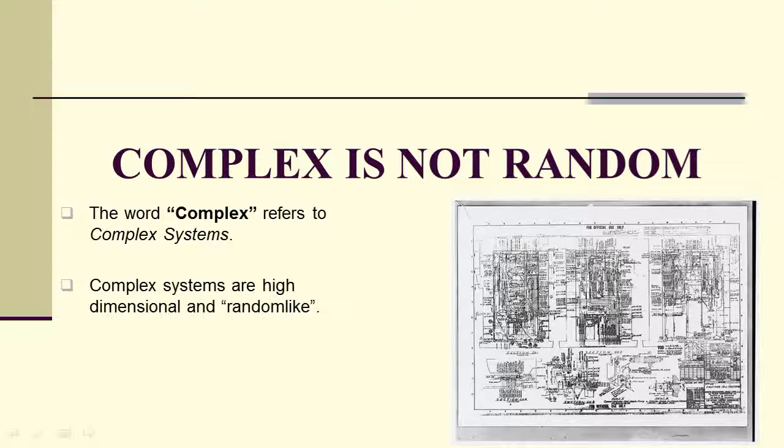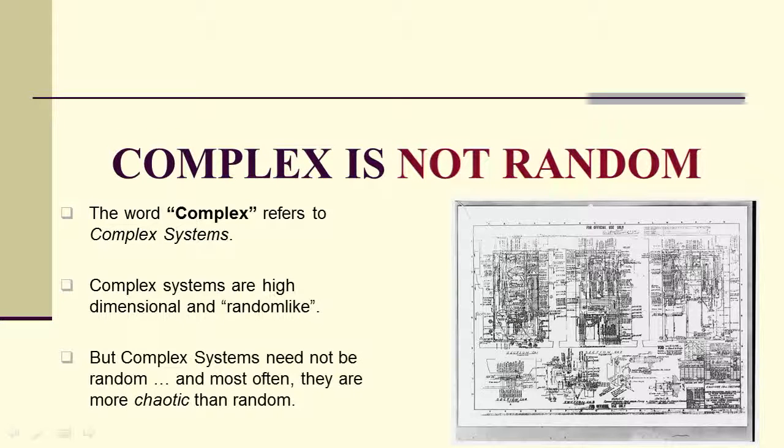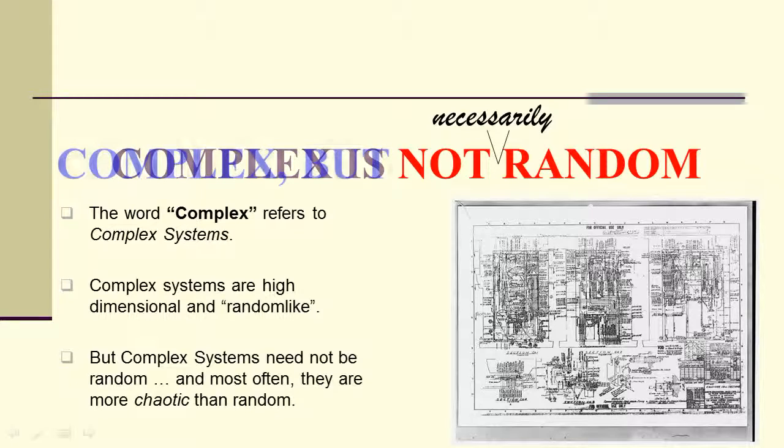Complex is not random. Complex systems can be high-dimensional and random-like, but they are not actually random. More often than not, they're chaotic. However, there tends to be a little bit of randomness in real-world applications. So what does it mean to be complex but not random?